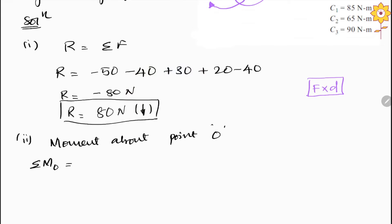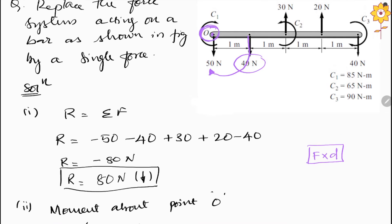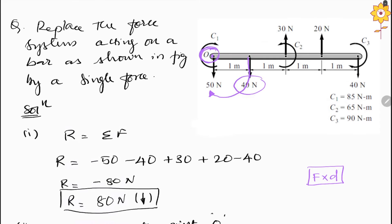So we write minus 40 into 1. For the 30 N force, it creates an anti-clockwise rotation about O, so it is positive. An important note: the distance must be measured from the origin. From the origin to the 30 N force is 1 + 1 = 2 meters. So we add plus 30 into 2.